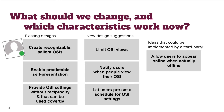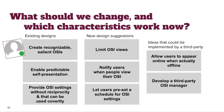Finally, since users are potentially juggling OSIs across many applications and trying to anticipate and control them — toggling settings in multiple apps and anticipating how they'll appear — would users benefit from a third-party OSI manager that allows them to turn OSI settings on and off or see how they currently appear to others in each app?